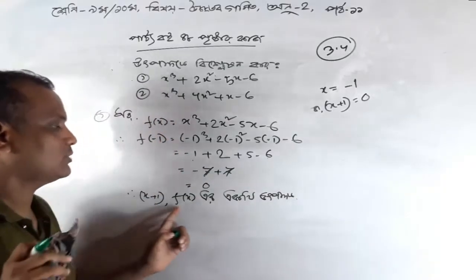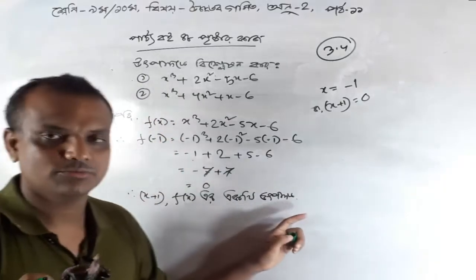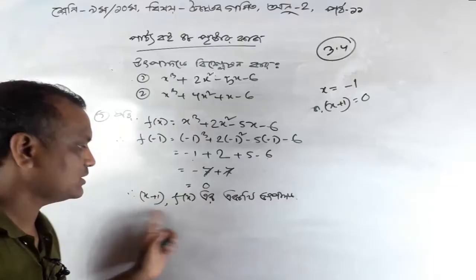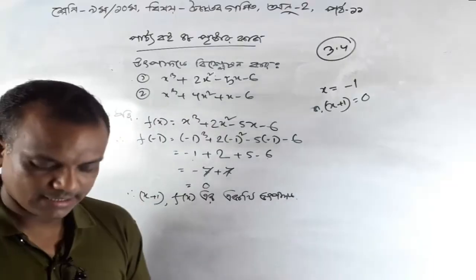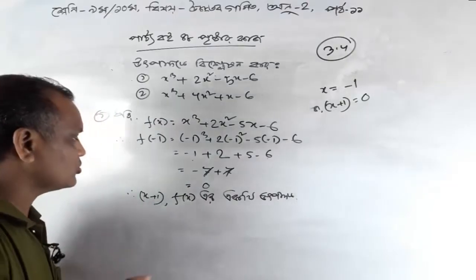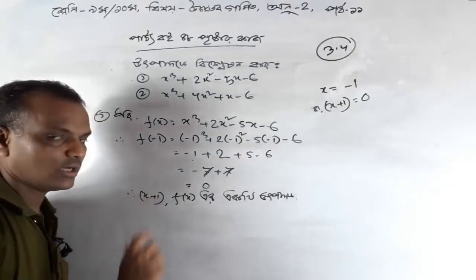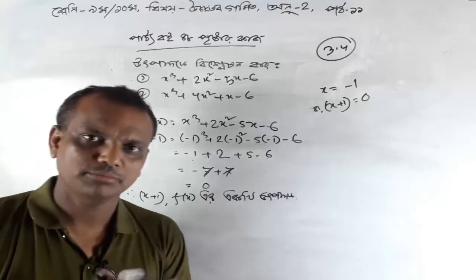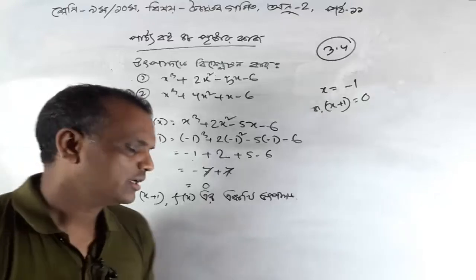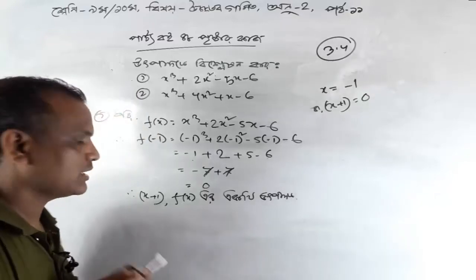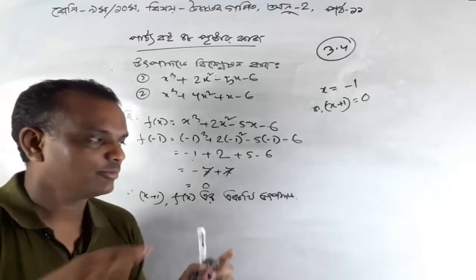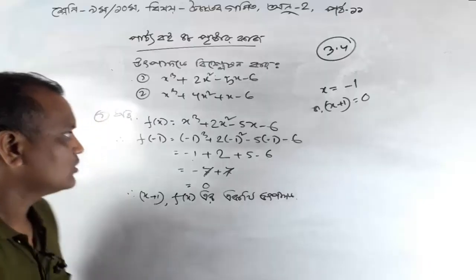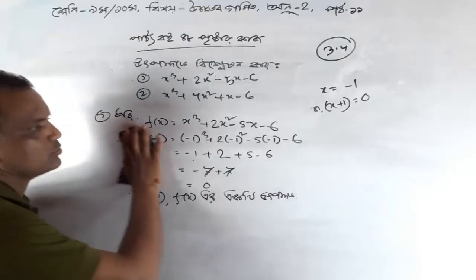x plus 1, f of x is 2. This is minus 1. H is the main clue. A x plus 1 is the main clue. So I have the main clue here.